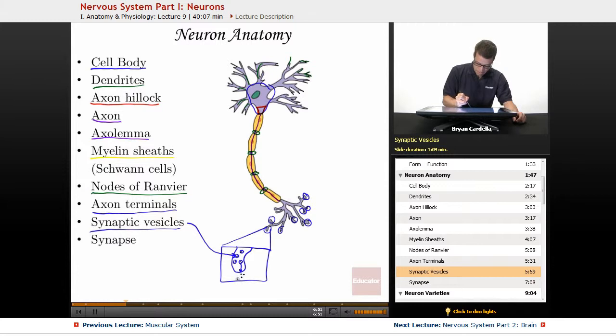And they end up traveling to the next neuron, or to whatever the neuron is affecting. Maybe it's a muscle. So these synaptic vesicles hold those little neurotransmitters or signal molecules until they're stimulated. And it's usually by calcium, which you're going to hear more about in the future.